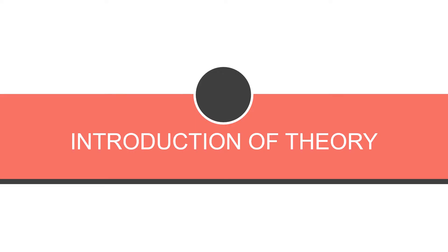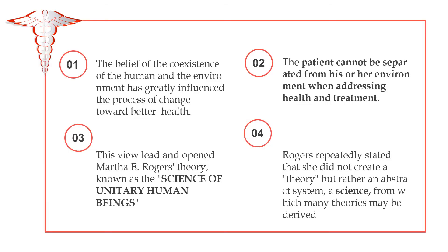In this part, we are going to talk about the overview of Rogers' theory. Rogers' theory is the belief that the coexistence of the human and the environment has greatly influenced the process of change toward better health. This view led to Martha E. Rogers' theory known as the Science of Unitary Human Beings, which allowed nursing to be considered one of the scientific disciplines. Rogers' theory defined nursing as an art and science that is humanistic and humanitarian, directed toward the unitary human and concerned with the nature and direction of human development. The goal of nurses is to participate in the process of change. Rogers repeatedly stated that she did not create a theory but rather an abstract system — a science from which many theories may be derived.